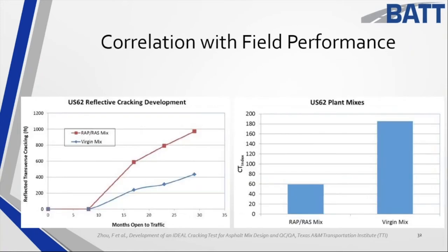This next graph emphasizes the importance of the Ideal CT test. On the left side is actual cracking; on the right side is laboratory cracking. There's more cracking on the wrap-razz mixture. Looking at the left, the burgundy line for the wrap and razz mix shows field cracking way up there. On the graph on the right, the wrap and razz mix has one of the lowest Ideal CT values. This is a very good test, and that's why the industry is moving forward with this test and others.